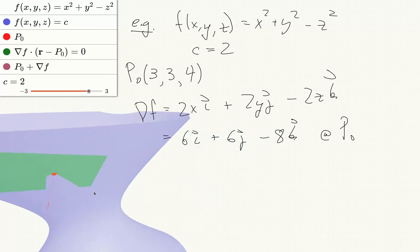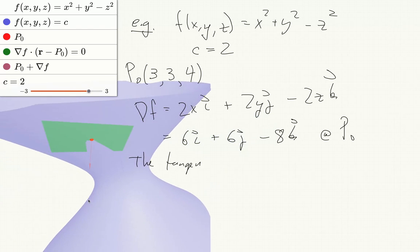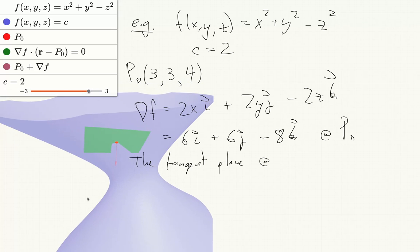And so the tangent plane at this point, again for c equals 2, is given by the equation 6(x minus 3) plus 6(y minus 3) minus 8(z minus 4) equals 0.